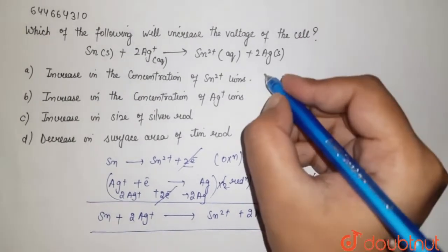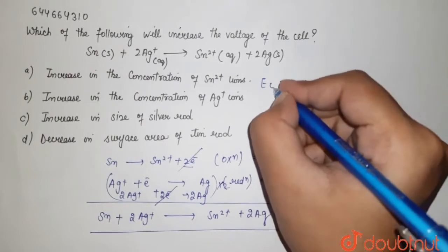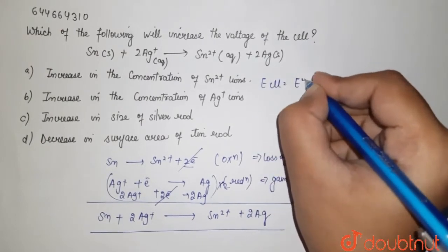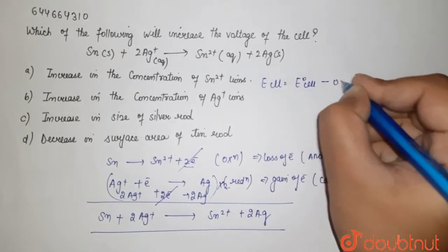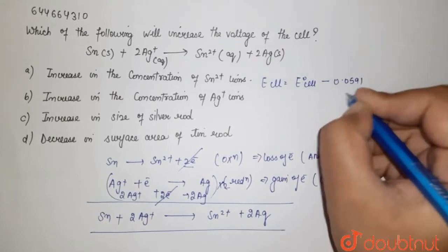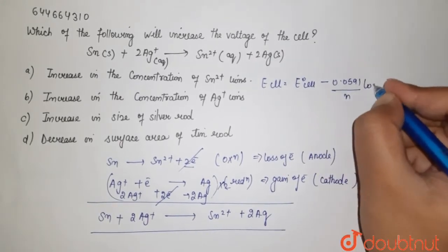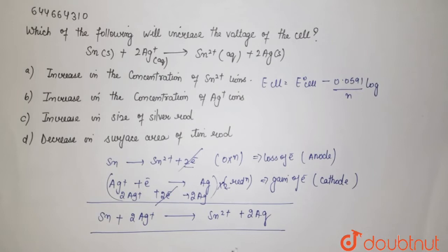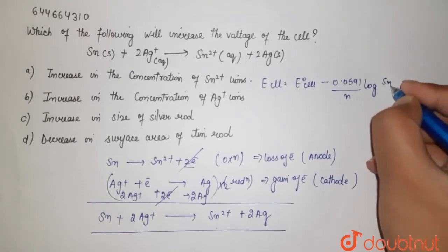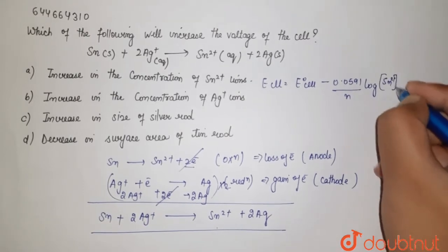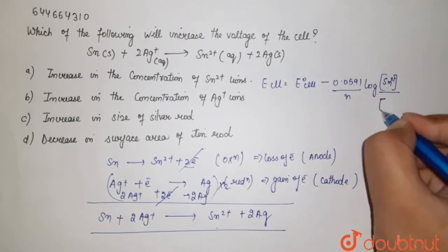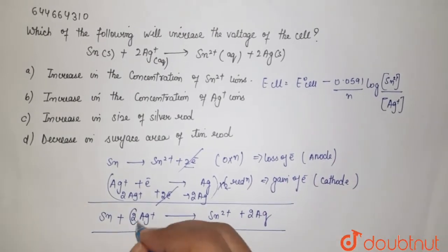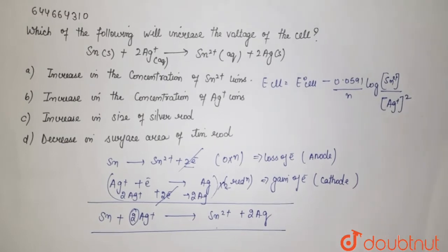Now if you see, talking about your Nernst equation, it says that your E cell equals E naught cell minus 0.0591 upon n, the number of electrons changed, times log of the concentration of your Sn2 plus at product side upon your concentration of Ag plus, where the coefficient goes to the power.